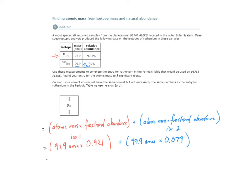So that's what we have. Our next step is to simplify this by multiplying 97.9 times 0.921. We end up with 90.1659. I'm not going to round this; I'm going to write out the whole calculated answer. And 99.9 times 0.079 is 7.8921.